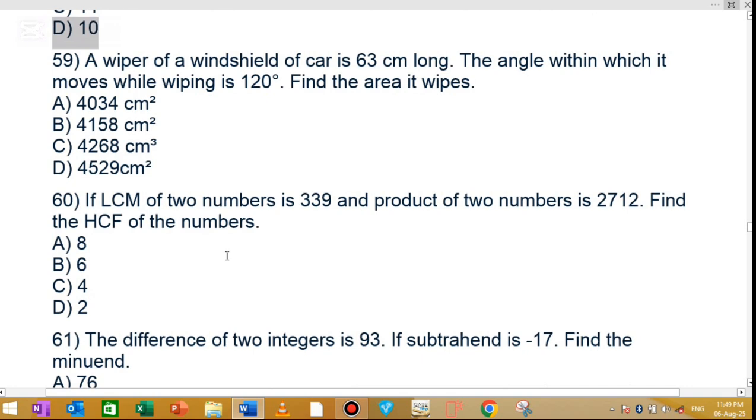Question number 59: A wiper of a car is 63 cm long, find the area it sweeps. The answer is 40.34. Option B is the correct answer.